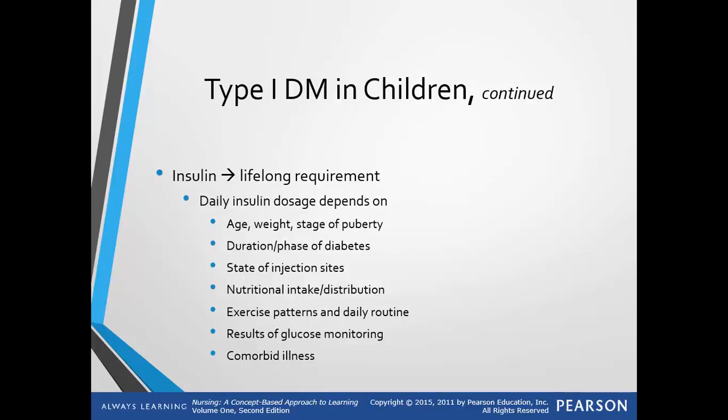Insulin is a lifelong requirement in type 1 diabetes. Daily insulin dosage depends on many factors including age, weight, stage of puberty, duration and phase of the diabetes, state of the injection sites, nutritional intake and distribution, exercise patterns, daily routine, results of glucose monitoring, and comorbid illnesses.